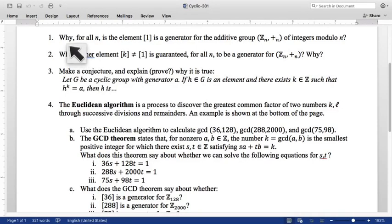So we made an argument in our last class about why statement number one here is true: that in the additive group of integers mod n, the element one—the equivalence class of one mod n—is a generator for this group. What did we say in our last class was the reason for that?